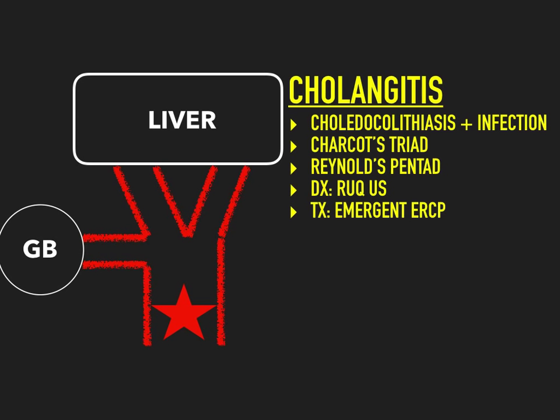'Itis' means inflammation, and cholangitis is inflammation of the entire biliary tree — the one that sounds most different from the other three and is the most severe. It's both the most different and the most serious, and you can picture mentally how different this is from the others.